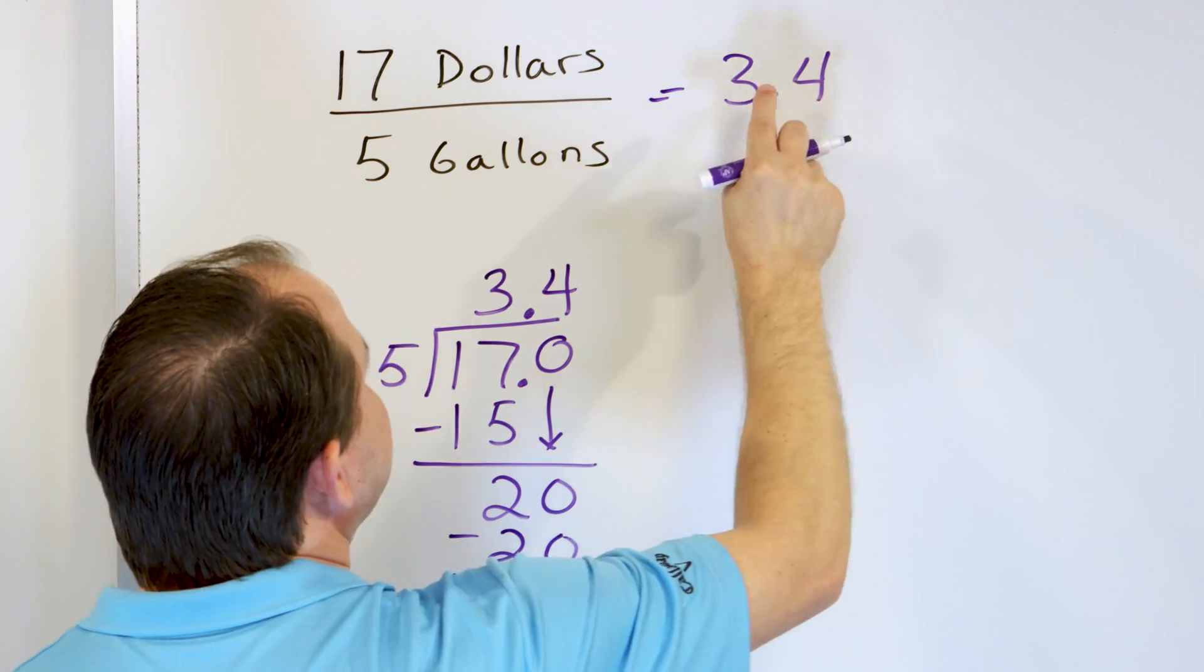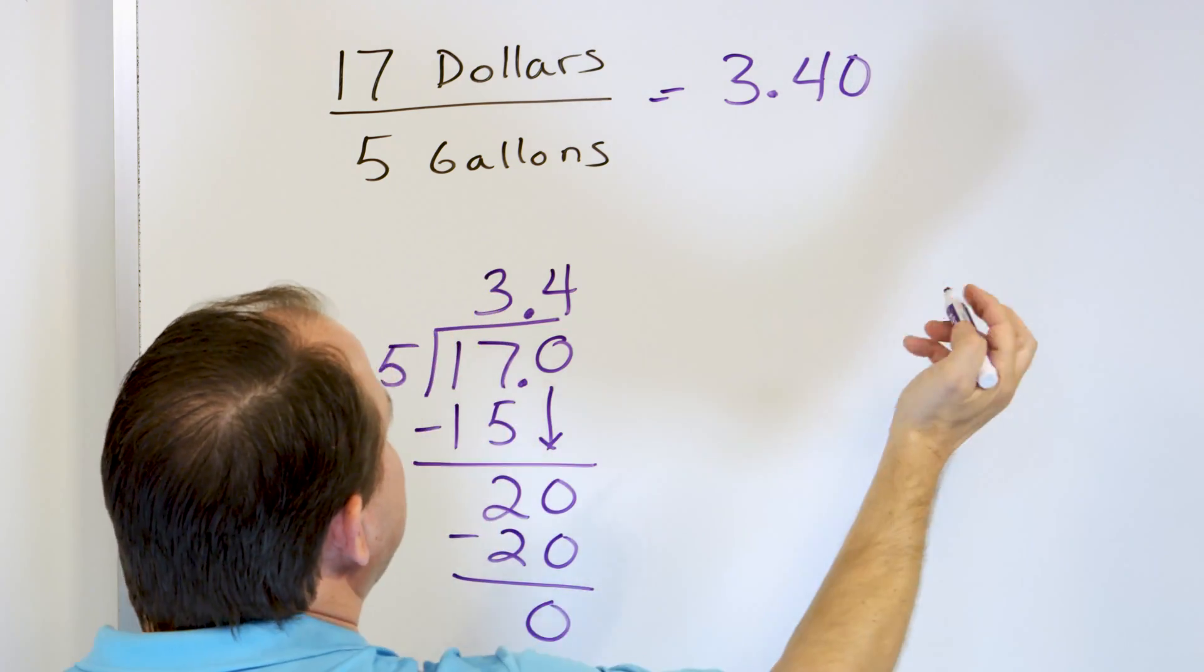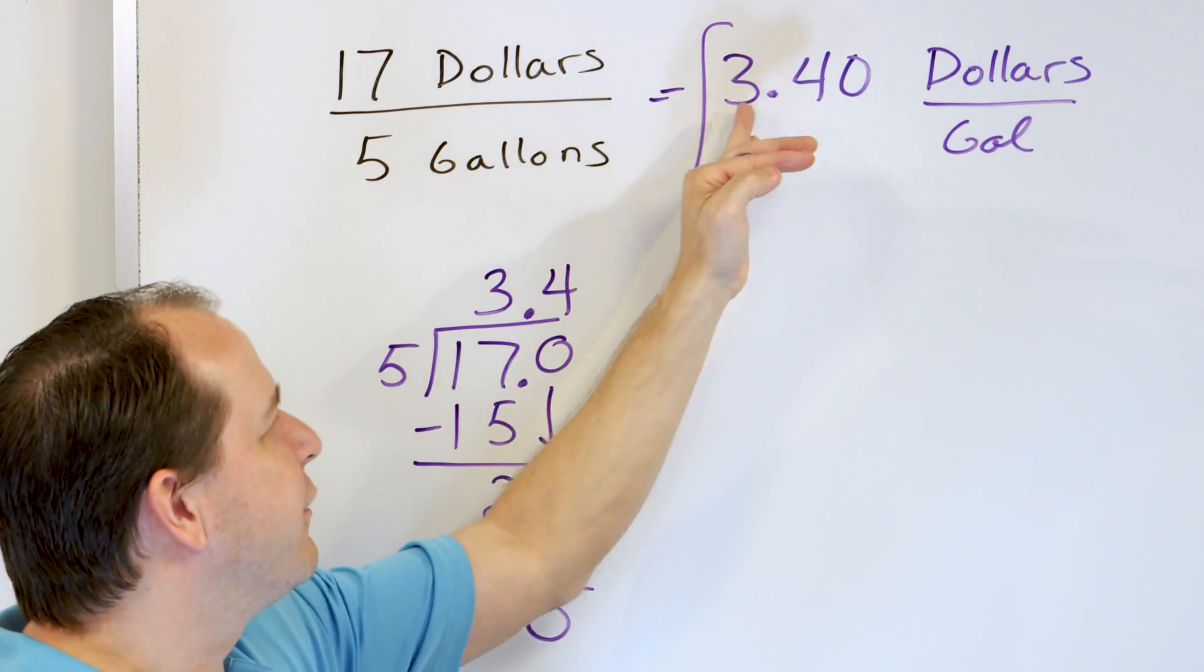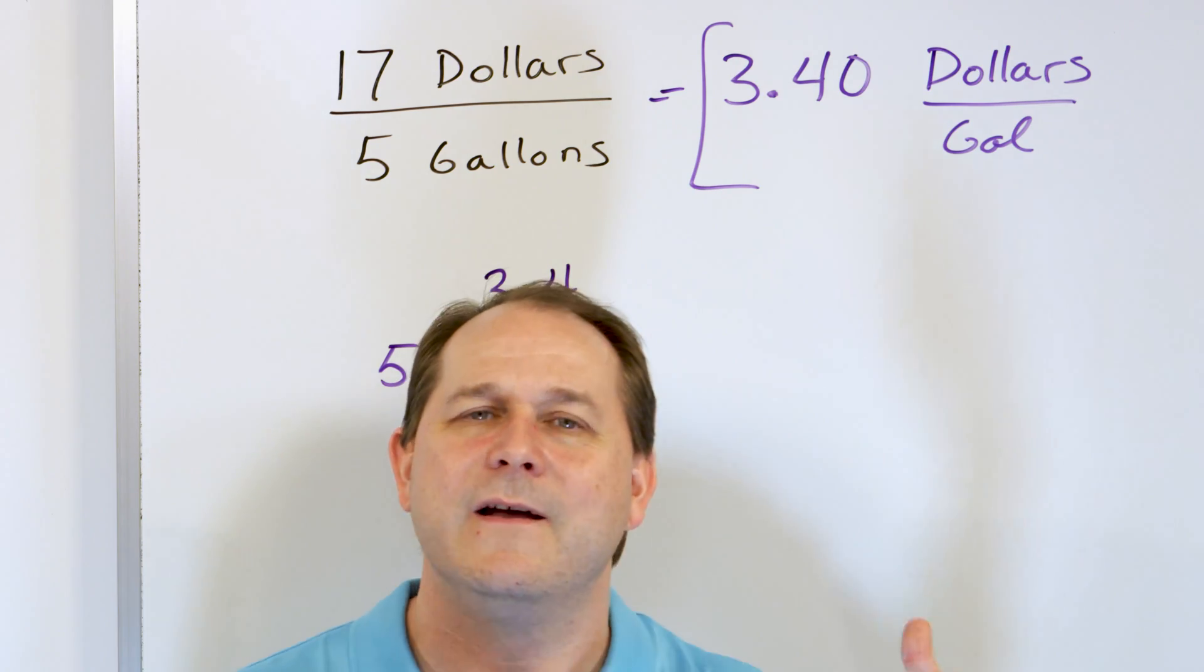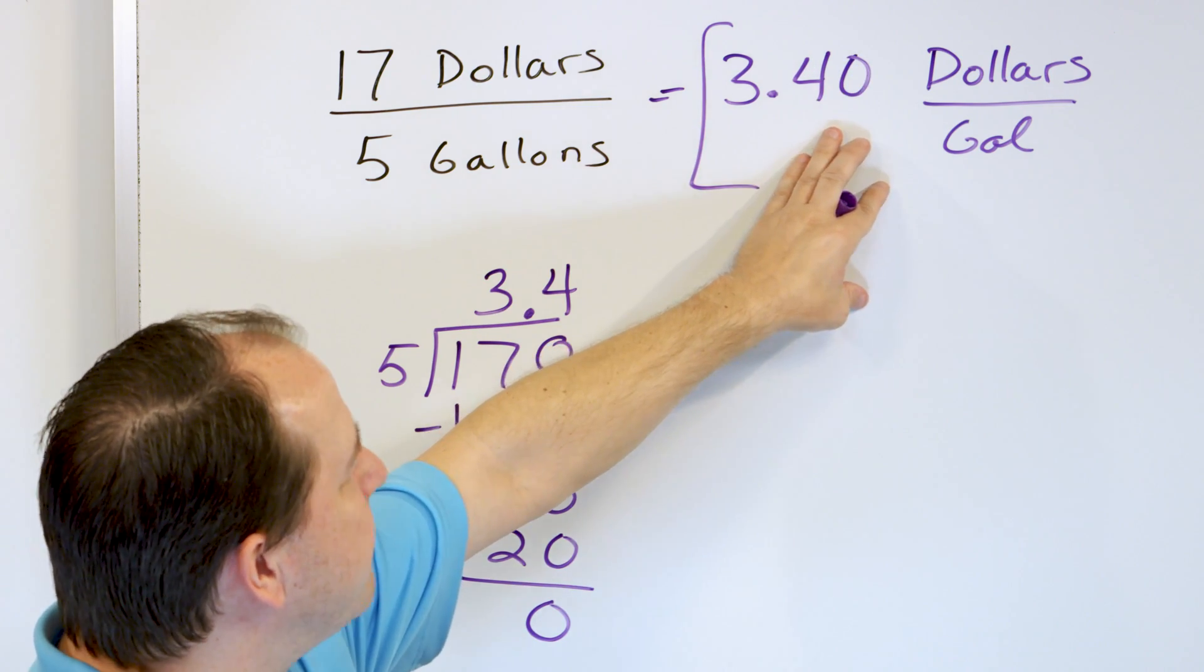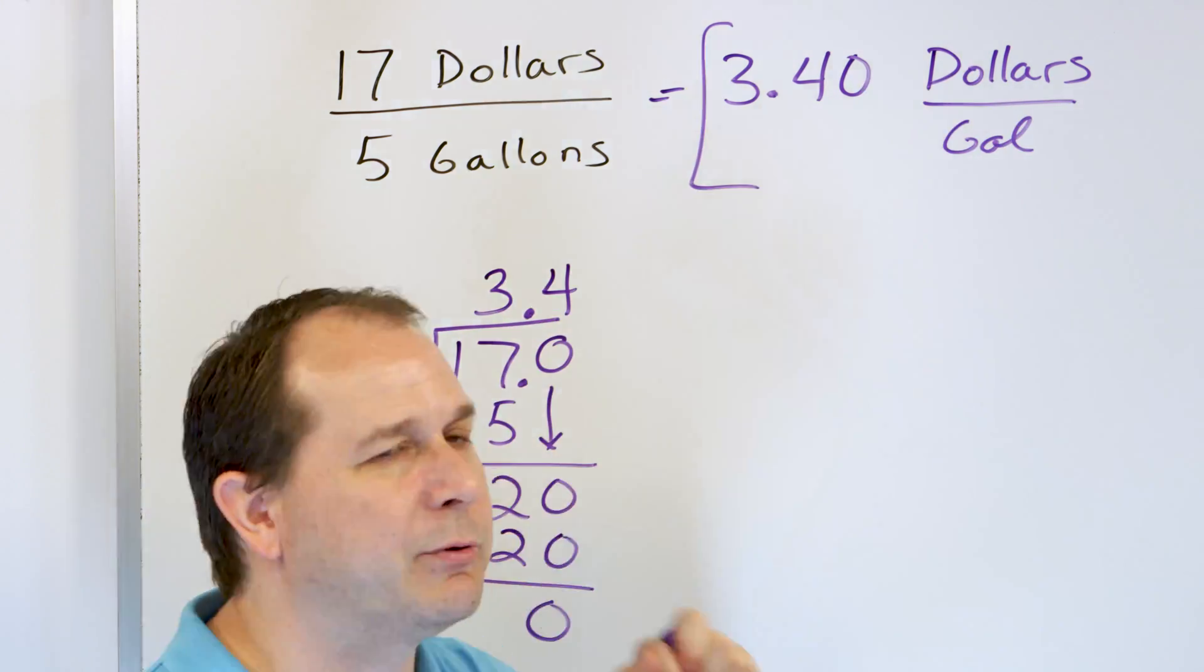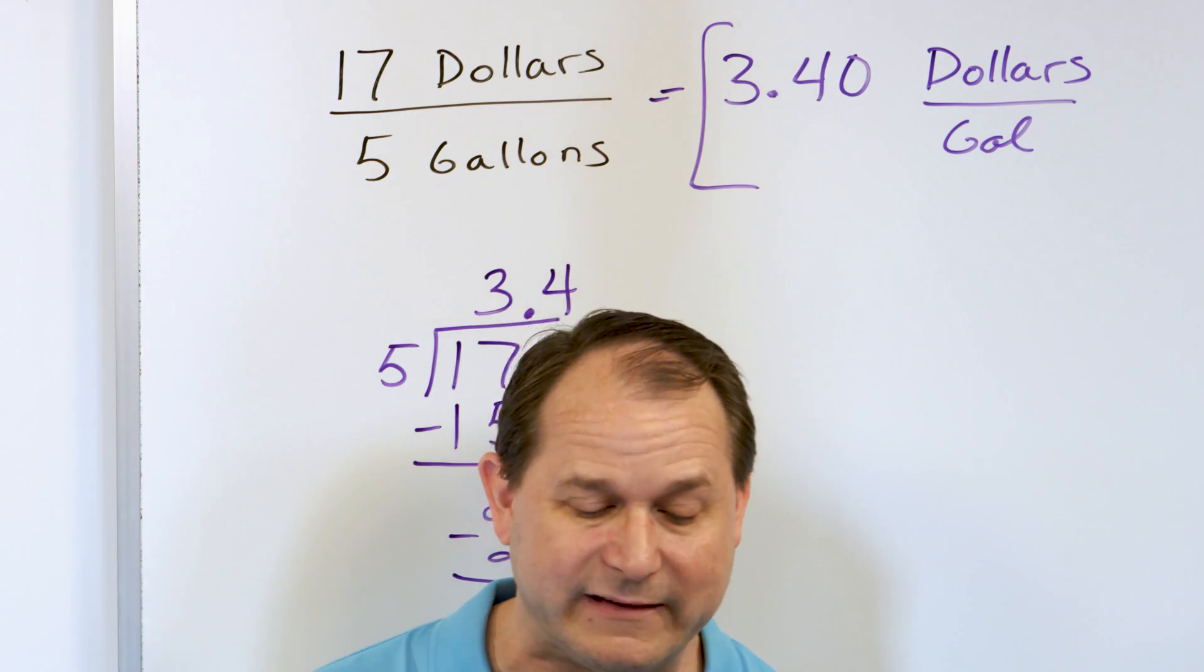But since we're dealing with dollars and cents, instead of saying $3.4 per gallon, we'll write it as $3.40, because trailing zero in money doesn't change anything, dollars per gallon. So the way to read this is $3.40 per gallon. Same thing. When you say $3.4 per gallon or $3.40 per gallon, it's the same exact thing. So this is the unit rate. Why would you care about this? Maybe you're buying from somebody, you're spending all this money, and you want to compare maybe another store to buy your milk from. You want to see if you can get a better deal. So by calculating the unit rate, $3.40 per gallon, I can compare different unit rates among stores and figure out the cheapest place to buy my milk. If I'm a business owner, that's going to save me a lot of money.